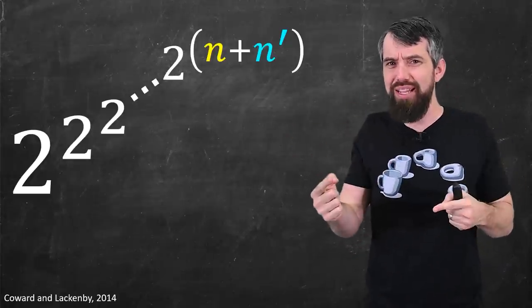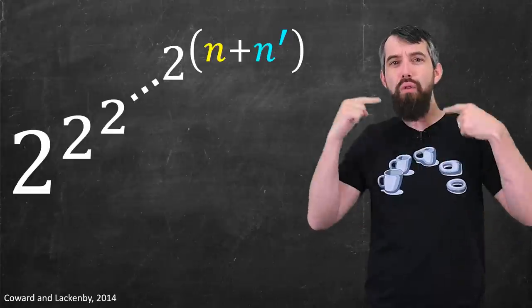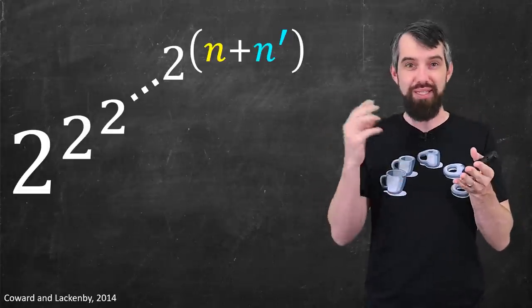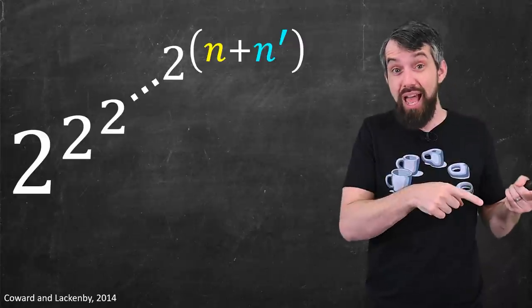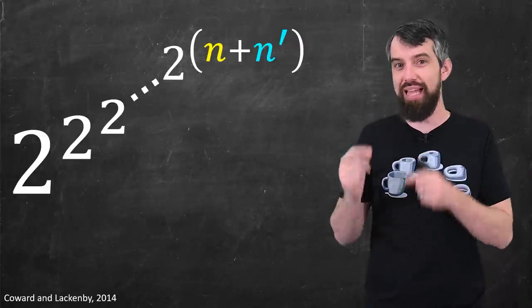The upper bound is a power tower, two to the two to the two to the two, all the way up to n plus n prime, where n is the number of crossings in the first diagram and n prime is the number of crossings in the second.